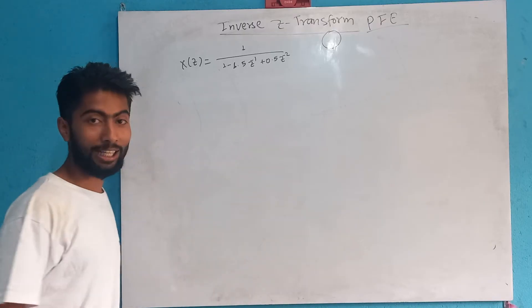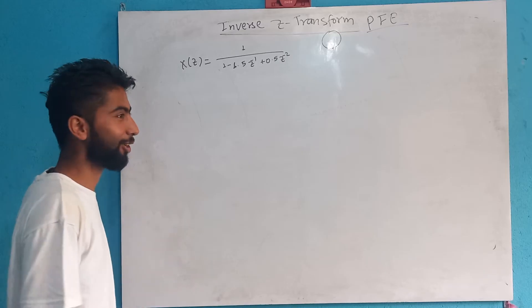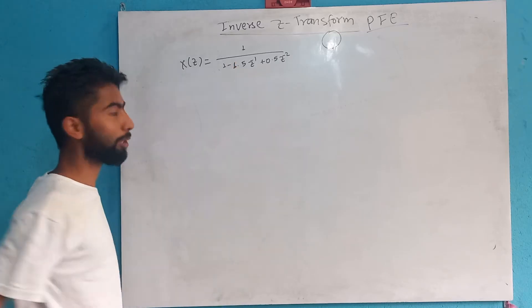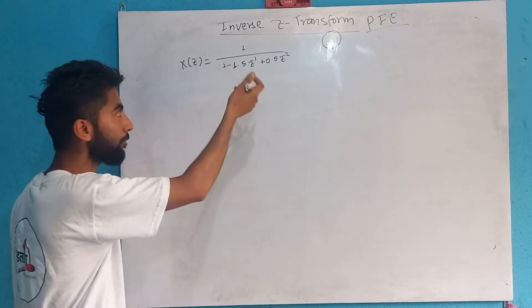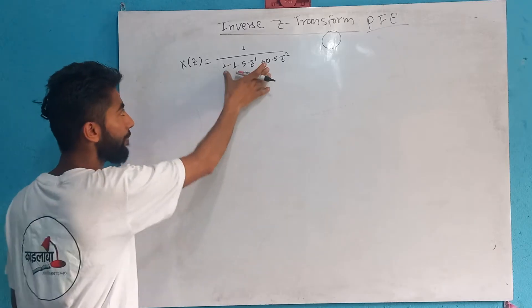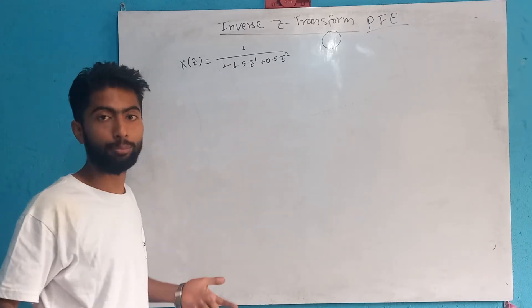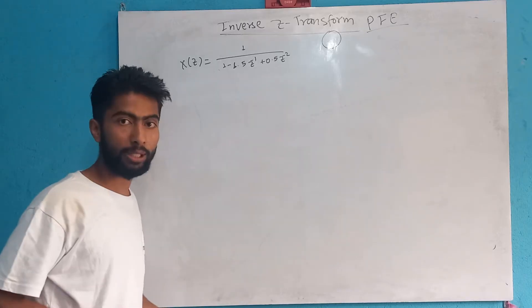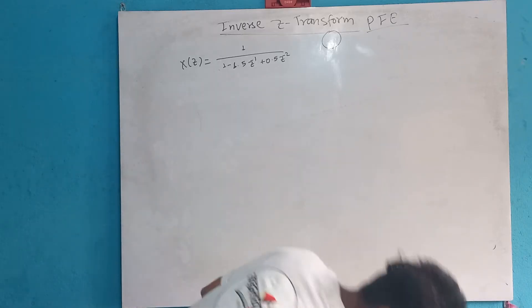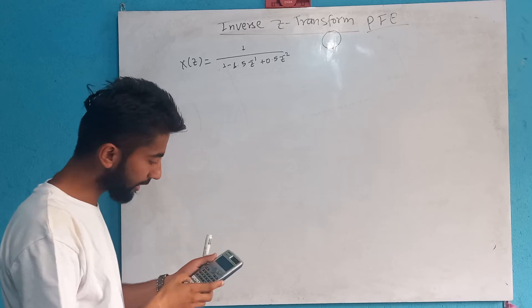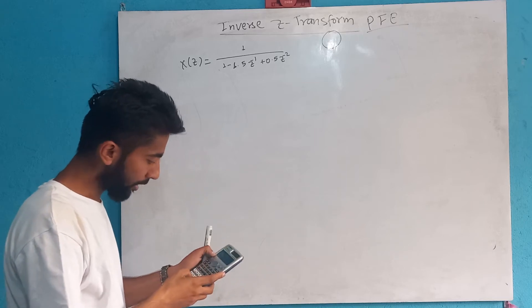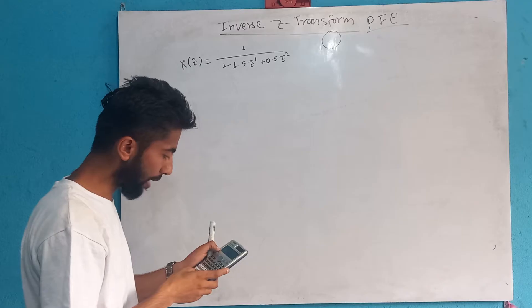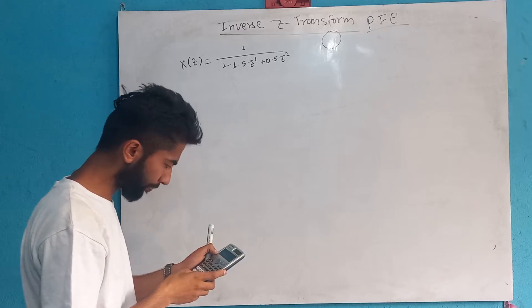So, what do we need to do? In the numerator and denominator, we have to factorize, we have to identify the symbols, and do the Z inverse form. You can solve the equation, or solve the quadratic equation.